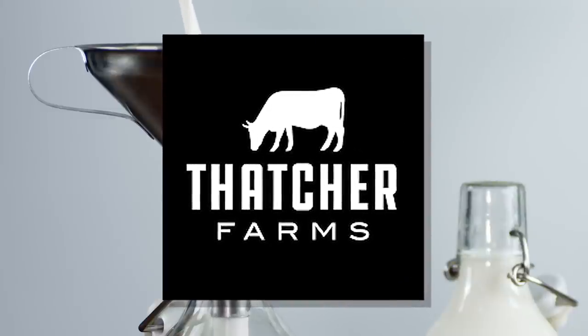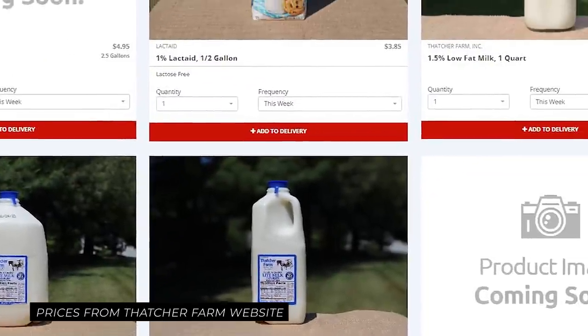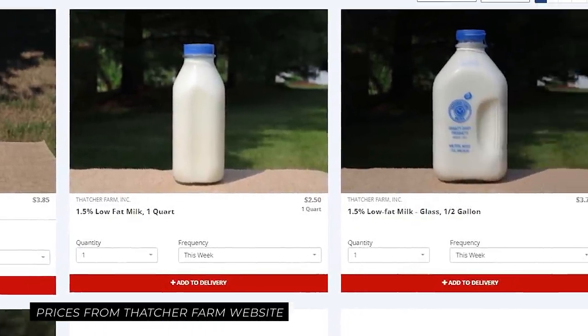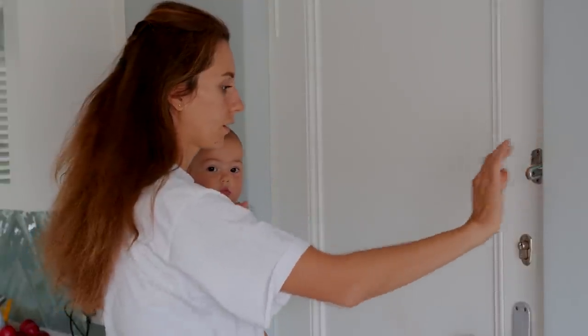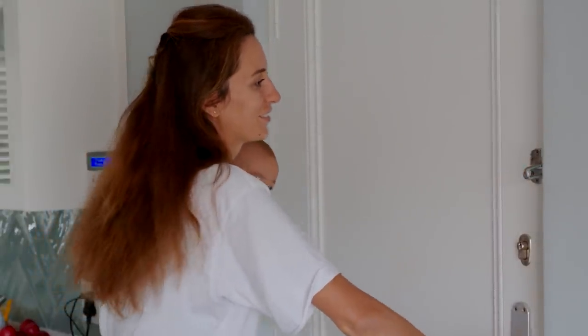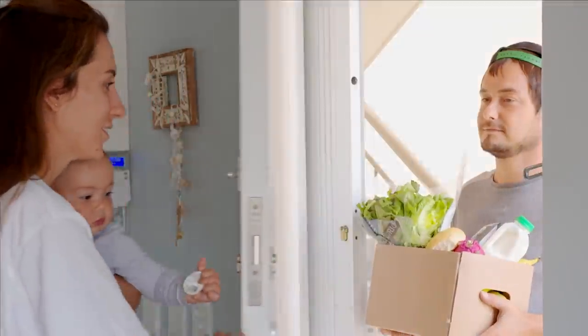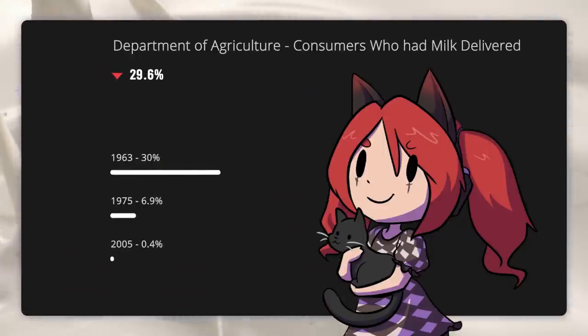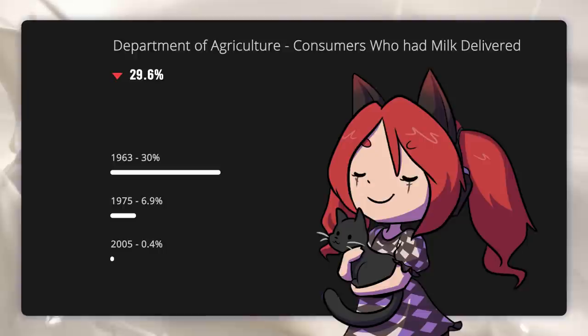In some communities, the milkman has returned, perhaps not in full force, but a company known as Thatcher Farm delivers milk to people living on the outskirts of Boston. By some estimates it only costs about 50 cents more per bottle, and you save a trip to the grocery store. With food delivery services on the rise, it's no wonder that milk delivery would eventually fall into the same category.